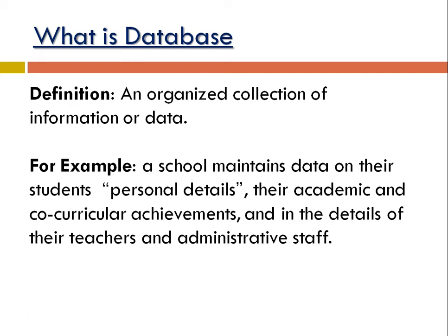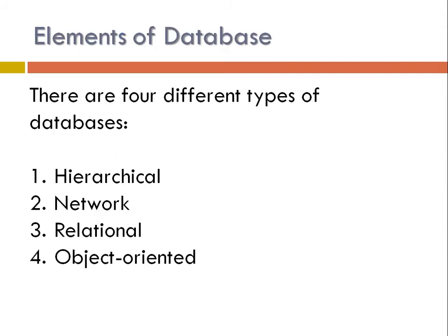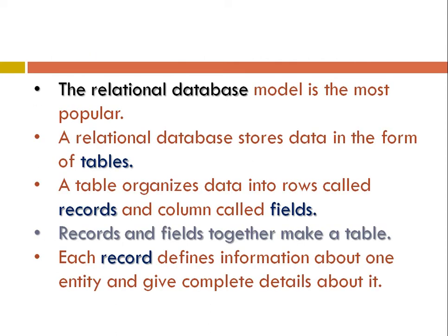A database is essentially an organized collection of data. A database arranges information in such a way that any specific piece of information can be easily accessed. There are four types of database models: hierarchical, network, relational, and object-oriented. Of these, the relational database model is the most popular.